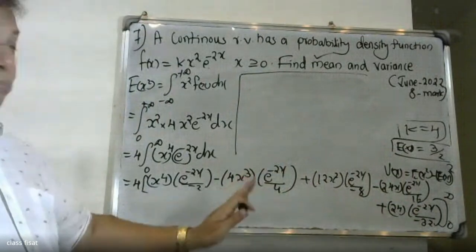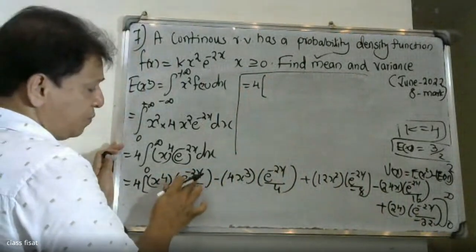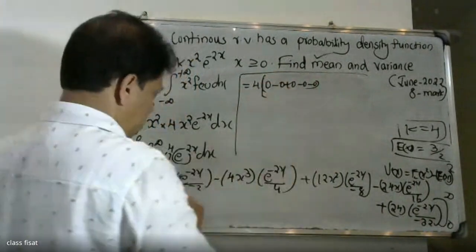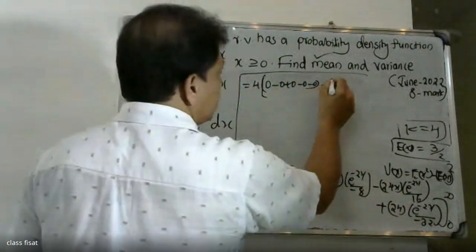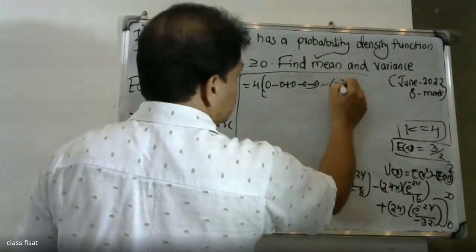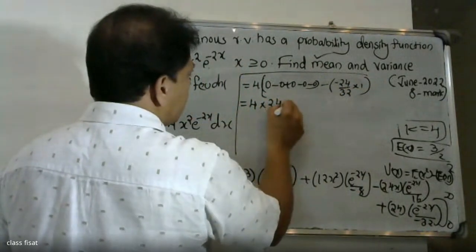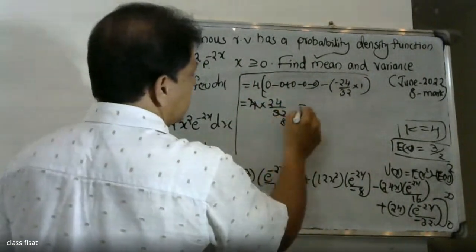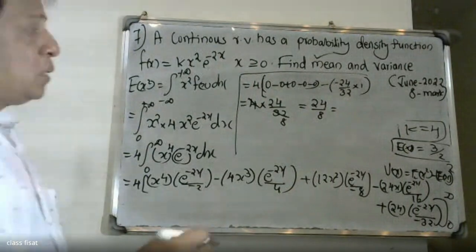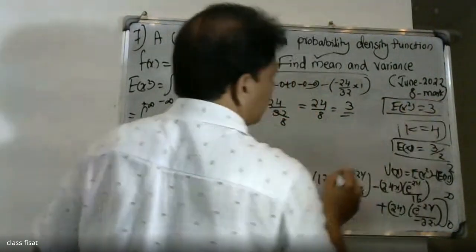Applying integration by parts repeatedly with x raised to 4 as the first function and e raised to minus 2x as the second: we get terms involving x raised to 4, then 4x cubed, then 12x squared, then minus 24x, then minus 24, all multiplied by successive integrals of e raised to minus 2x. At the upper limit of infinity all terms are 0, and at the lower limit of 0 all terms vanish. The surviving term gives minus 24 by 32, and 4 times 24 by 32 equals 4 times 24 by 8, which is 3. Therefore the expectation of x squared is equal to 3.